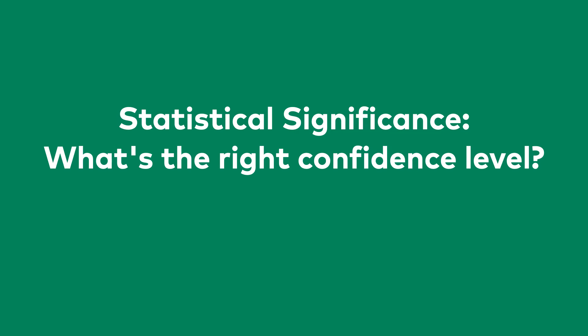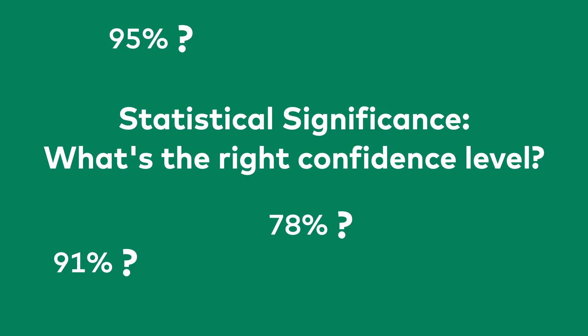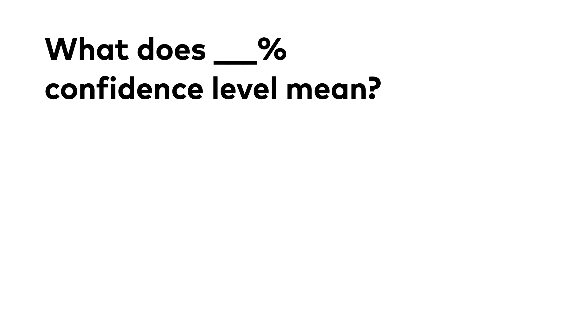We have seen statistical significance numbers like 91% or 78%. You might have heard people saying that 95% is the sufficient confidence level when it comes to statistical significance. Some say the best practice is 90%, others say 99%. But what's the truth? What is good enough? What is too low? What is too high? What does 80% confidence level mean? What does 95% mean? What does 99% mean? And what does 100% mean?